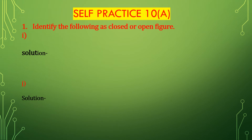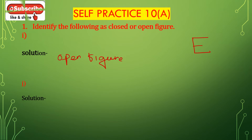Now IB. First draw the figure. This figure is given and this is an open figure. JB. First draw the figure. This is a closed figure.